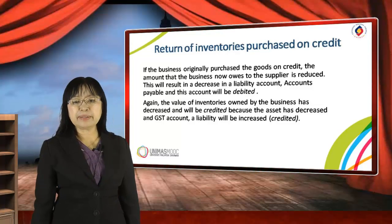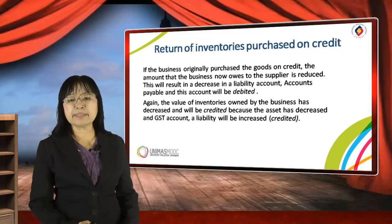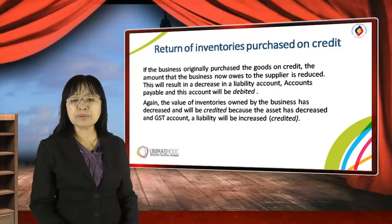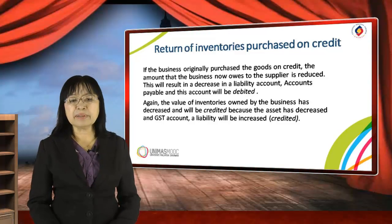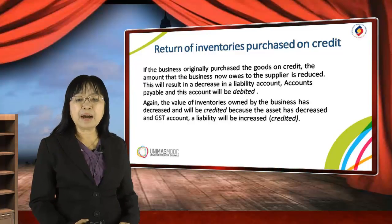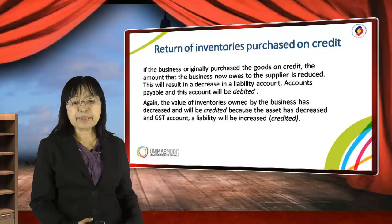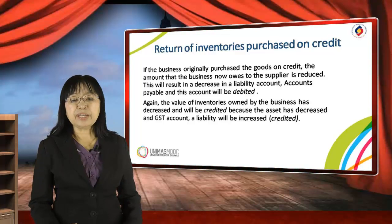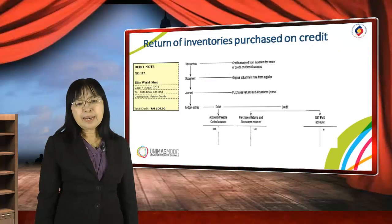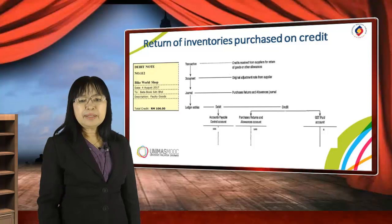Returns of inventory purchased on credit — this is when we return goods to the supplier. If the business originally purchased goods on credit, the amount the business owes to the supplier is reduced because of the return. This results in a decrease in the liability account — accounts payable — which will be debited. The value of inventory owned by the business has decreased and will be credited because the asset has decreased. The GST paid account liability will also be adjusted. The transaction name is purchases returns, and the document is a debit note.